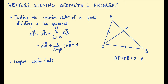We learned in the video on position vectors how to find AB in terms of those two position vectors — go back to that video if you want to check that out. This formula is really useful for solving geometric problems. It might look complicated but all we're basically saying is that OP is OA plus a fraction of AB. That's all this really says.